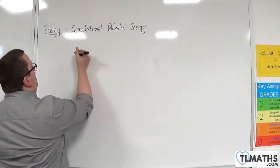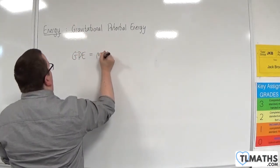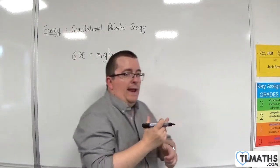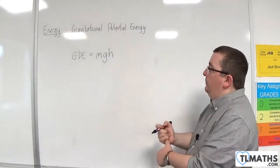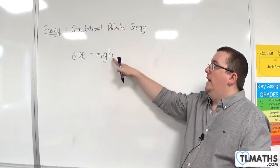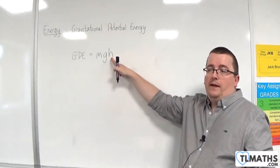So, the formula for gravitational potential energy is mgh, where m is the mass, g is the acceleration due to gravity, and h is the height above the ground.